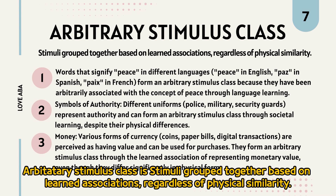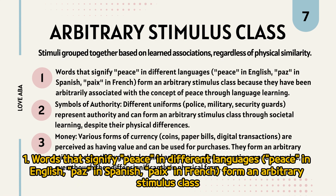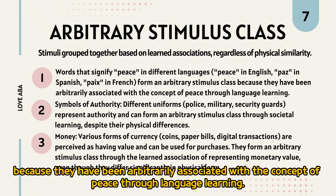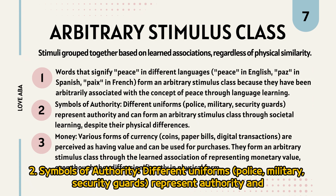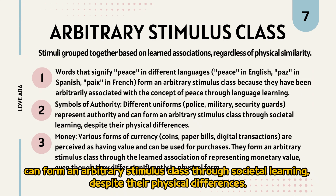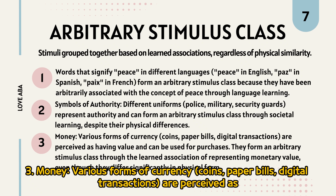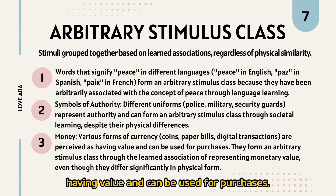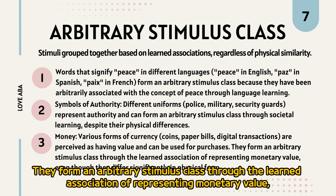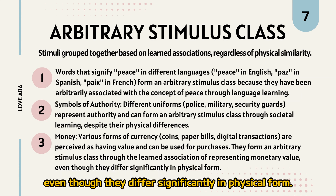An arbitrary stimulus class consists of stimuli grouped together based on learned associations, regardless of physical similarity. For example: words that signify peace in different languages — 'peace' in English, 'paz' in Spanish, 'paix' in French — form an arbitrary stimulus class through language learning. Symbols of authority such as police, military, and security guard uniforms represent authority through societal learning. Various forms of currency — coins, paper bills, digital transactions — are perceived as having monetary value through learned association.